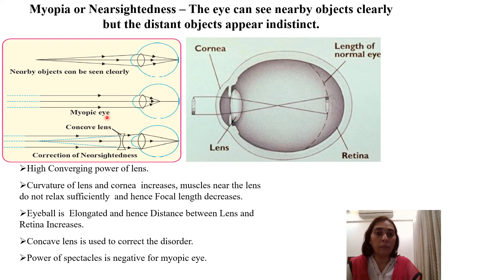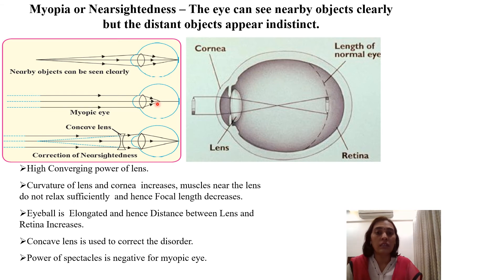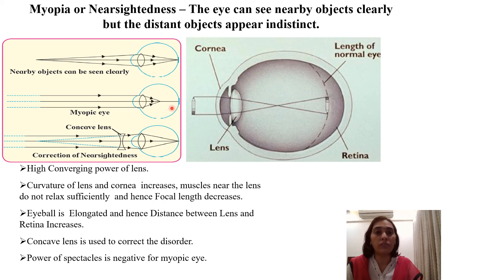Coming to the myopic eye defect — the person is not able to see distant objects clearly. Rays of light coming from a distant object are parallel. After falling onto the eye lens, they converge in front of the retina rather than on it. This happens due to an increase in the converging power of the eye lens — the rays converge before they reach the retina. As a result, the image formed on the retina will not be clear and the person cannot see distant objects clearly.